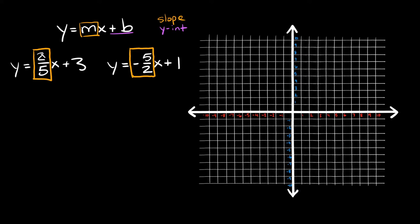Two-fifths and five-halves are reciprocals, and also two-fifths is positive while the other one is negative. So since they are reciprocals of one another and they have opposite signs, these two linear equations are perpendicular to each other.